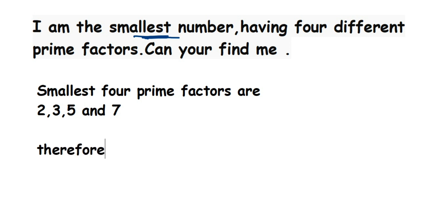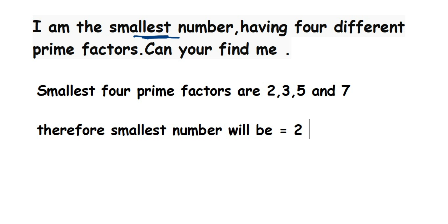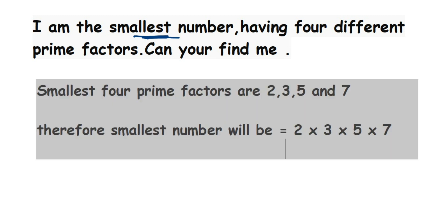Therefore, the smallest number will be 2 × 3 × 5 × 7. When you multiply: 2 × 3 = 6, 6 × 5 = 30, and 30 × 7 = 210. So the answer is 210.